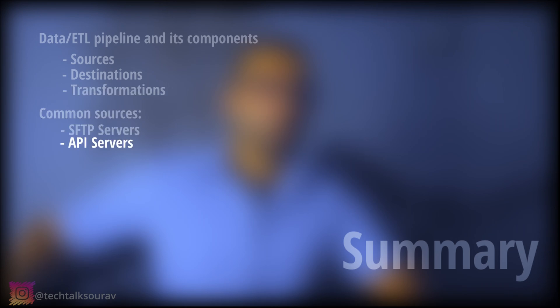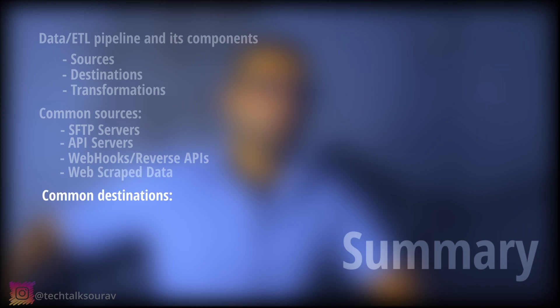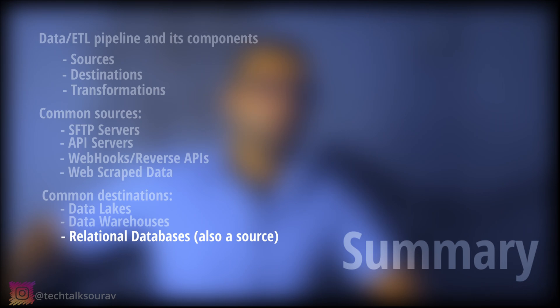To summarize: in this video we discussed data pipelines and their components — sources, destinations, and transformations. We looked at the most common sources such as SFTP servers, API servers, webhooks or reverse APIs, and web scraped data. We then discussed typical destinations such as data lakes, data warehouses, and relational databases, which can also serve as a source. Finally, we conceptually discussed some transformations that a typical data engineer would perform day to day.